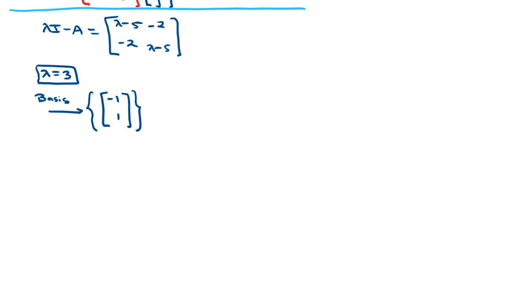But as we noted in class, in order to get rid of the cross term, we need a matrix P that orthogonally diagonalizes the matrix A. So the issue with this basis vector is that it's not a unit vector, so we have to go one step further and unitize this basis vector. We'll divide each entry by the norm, which is the square root of 2, and we get this as a more appropriate basis vector.